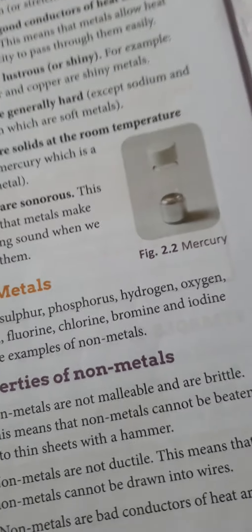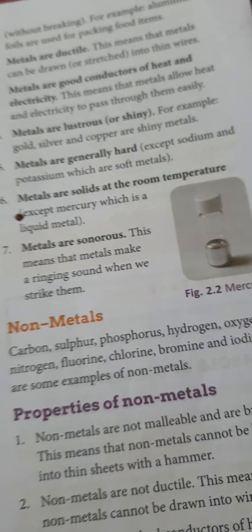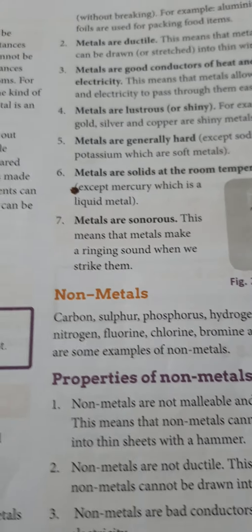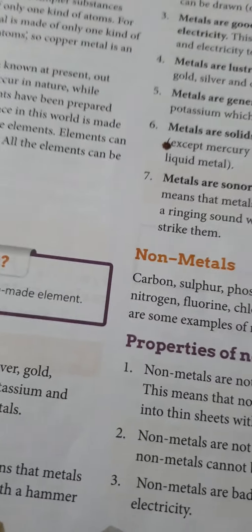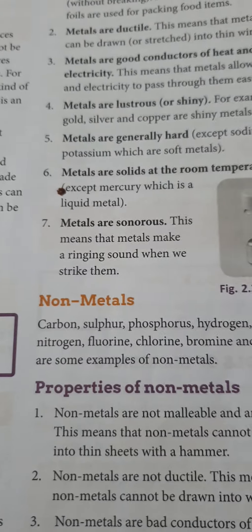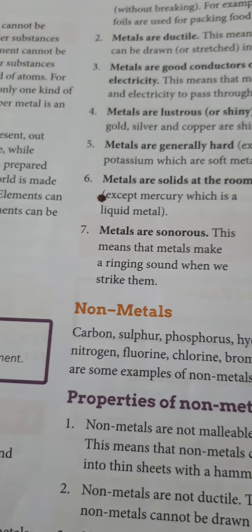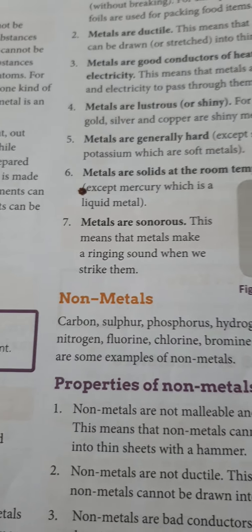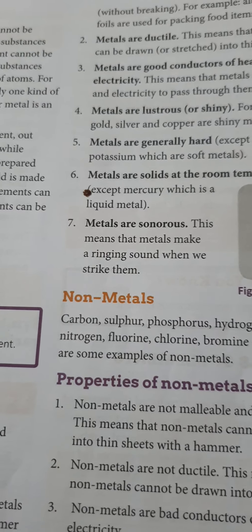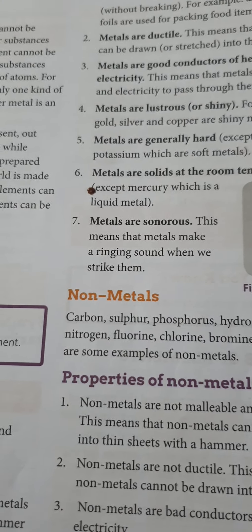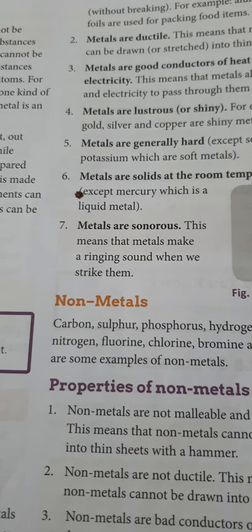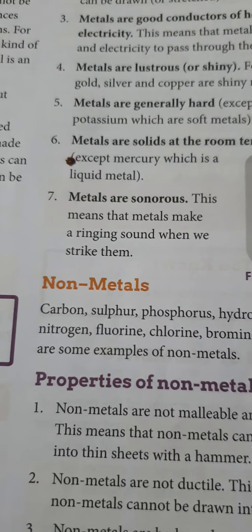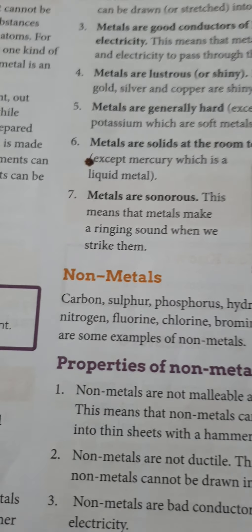Some metals also react with acids. Hydrogen gas is produced when metals react with acid. For example, zinc reacts with hydrochloric acid and produces zinc chloride and hydrogen gas.